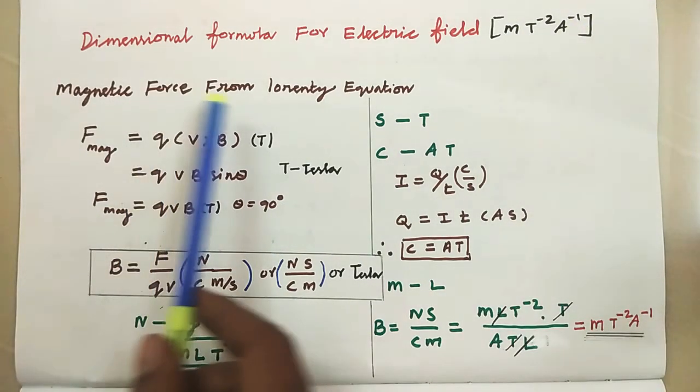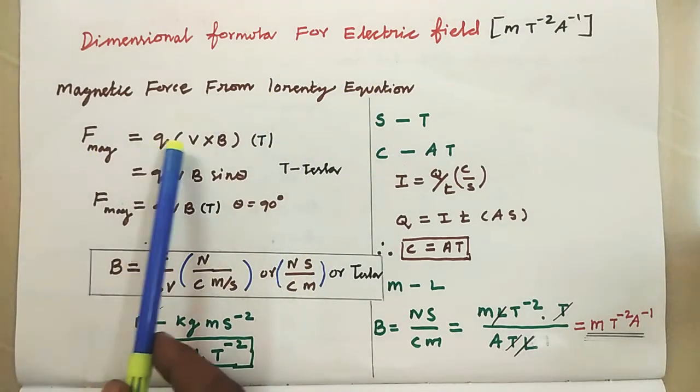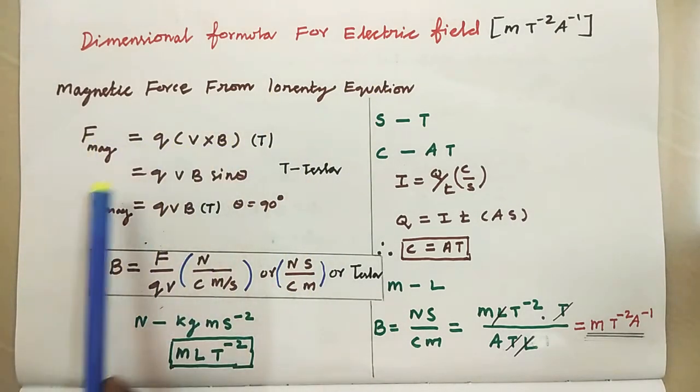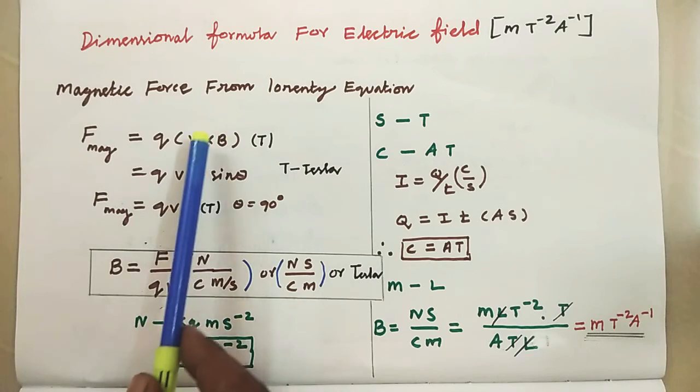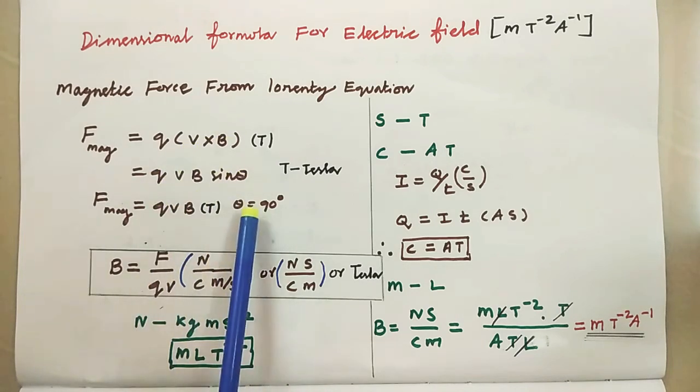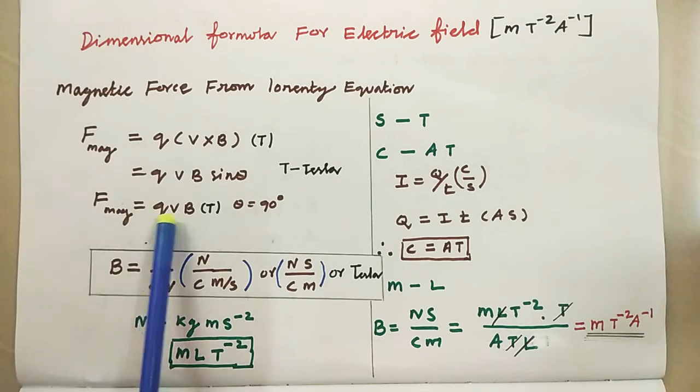So, magnetic force from Lorentz equation, F is equal to Q, V cross B. So V cross B, we can write as VB sine theta, where sine theta takes 90 degree, so QVB.